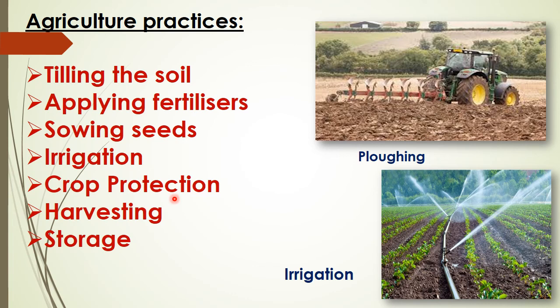Chemicals are also used for destroying weeds and insects. Next is harvesting — when the crops are mature, they are harvested. This process of cutting and collecting the mature crop is called harvesting. Then storage — once the crop is harvested, it must be stored properly to prevent development of fungus and damage by pests like rats, moles, or birds. Neem is a good natural substance that keeps insects and pests under control.